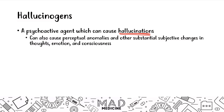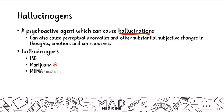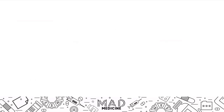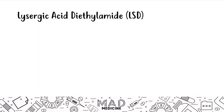The hallucinogens you need to know for Step 1 are LSD, marijuana — and you might be wondering why marijuana is on the hallucinogen list and not the CNS depressant list, and we'll address that — as well as MDMA, also known as the street drug ecstasy, and PCP. Let's start with LSD, also known as lysergic acid diethylamide.